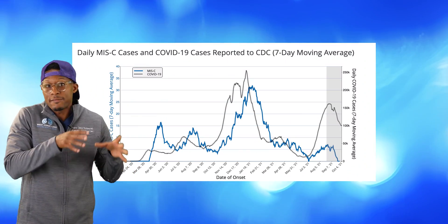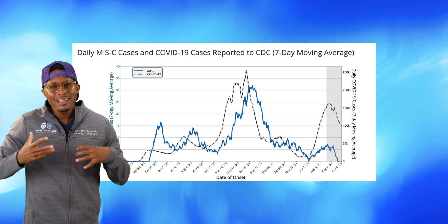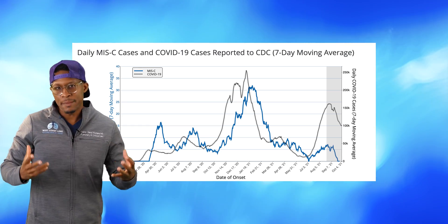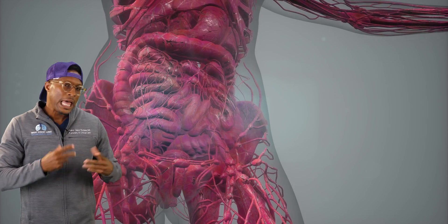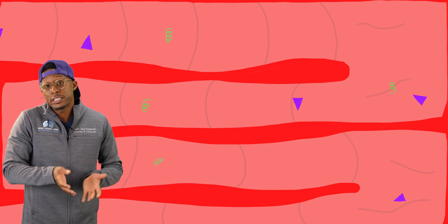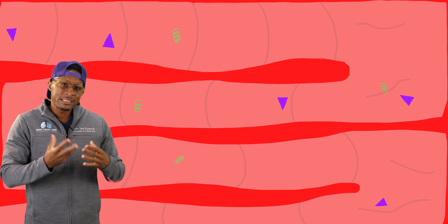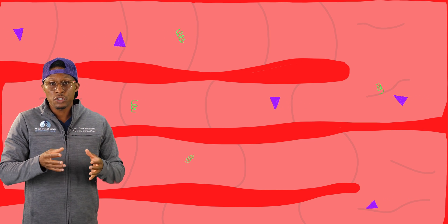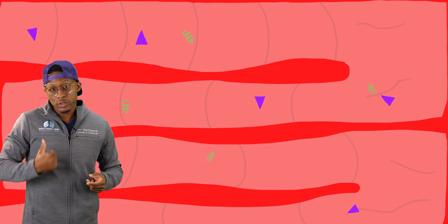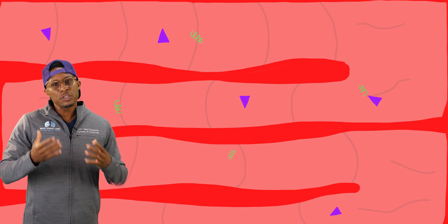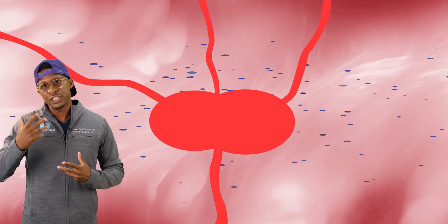When you look at MIS-C, what we do know is that up to this point of the SARS-CoV-2 pandemic, about 4,500 kids in the United States have had MIS-C. What exactly is MIS-C? MIS-C is an inflammatory syndrome that's associated with persistent SARS-CoV-2 remnants, usually within the GI tract. As a result, you get a stimulation of the inflammatory response.